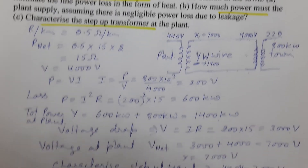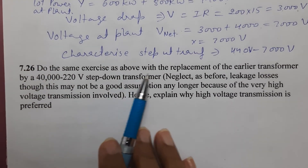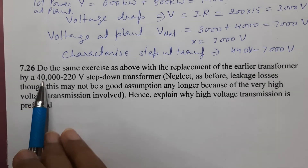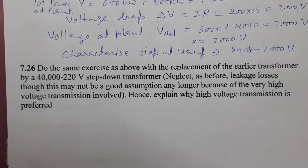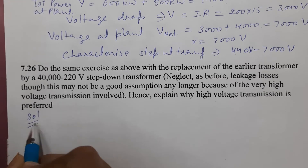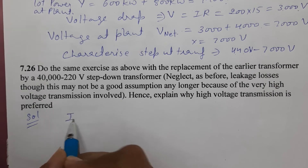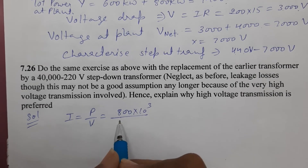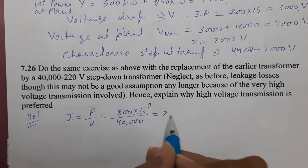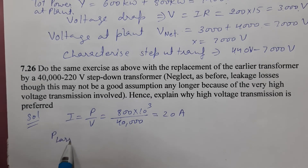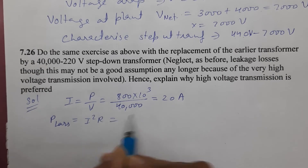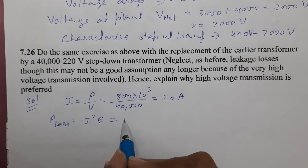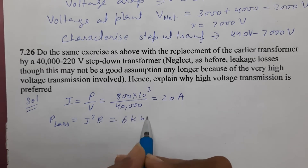Now question 7.26 asks the same exercise but replacing the earlier transformer with a 40,000 to 220 volt transformer. Now if we use 40,000 volts instead of 4,000 volts, we find the new current: I = P/V = 800×10³ / 40,000 = 20 amperes. Power loss = I²R = 20² × 15 = 6 kilowatts. This is 6 kilowatts — much less than the 600 kilowatts lost in the first case.